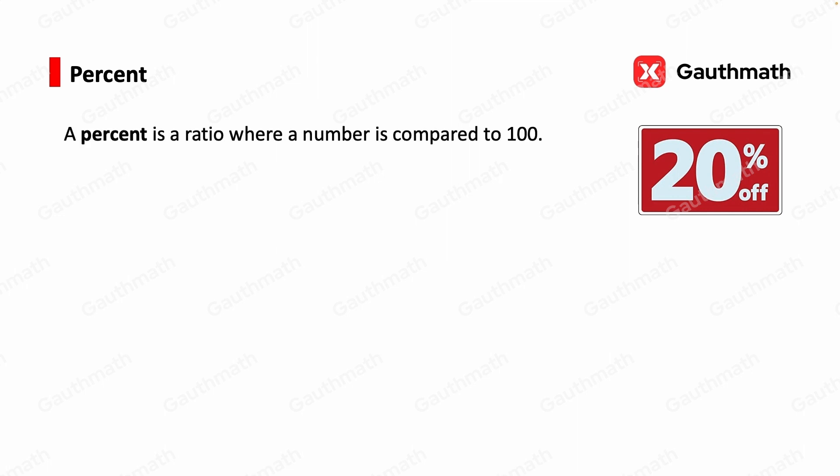A percent is a ratio where a number is compared to 100. So based on the definition, x% equals x over 100.